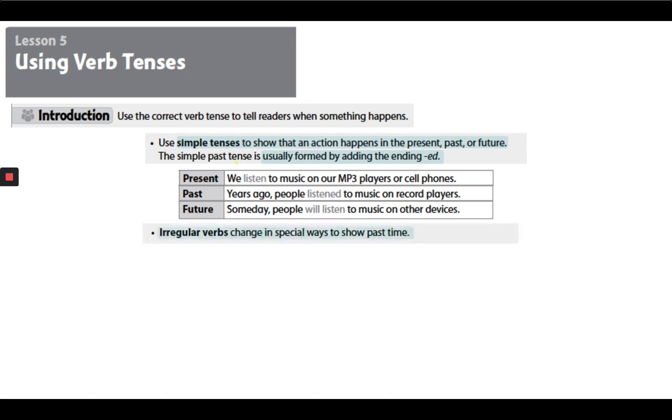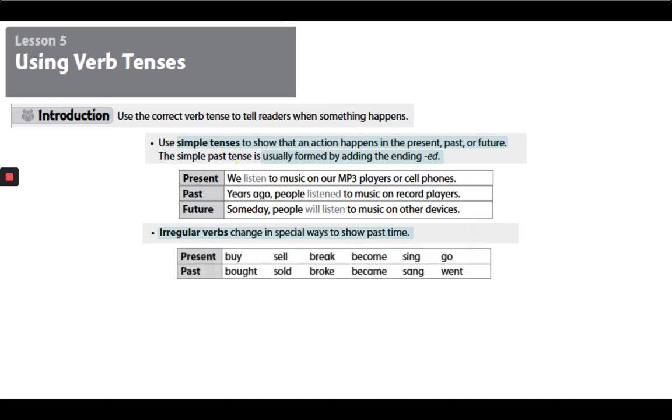Irregular verbs change in special ways to show past time. So our examples for present and past: we have buy turns into bought, sell and sold, break and broke, become and became, sing and sang, go and went.